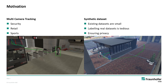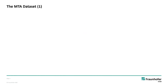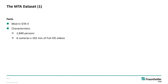Here you can see an example of a multi-camera track. Our synthetic MTA dataset was created by using a mod which we developed for GTA 5. The recorded dataset contains 2840 persons, and we recorded videos of six cameras with a length of 102 minutes per camera in full HD.